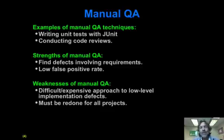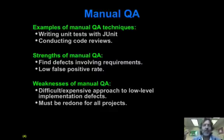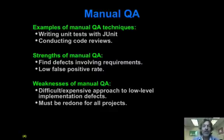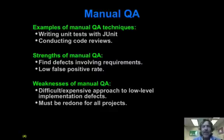When I talk about manual quality assurance, I'm talking about things that you have to do essentially uniquely for each system that you write — there's some domain specificity to them. The two big examples of manual quality assurance are writing unit tests and conducting code reviews. You can't really reuse unit tests each time you develop a new software system; you have to kind of start over from scratch. Similarly, the fact that you've reviewed one software system doesn't mean you don't need to review the next one. Manual quality assurance is absolutely essential.